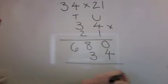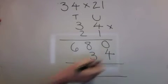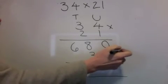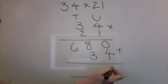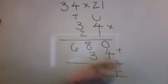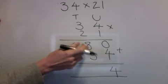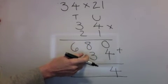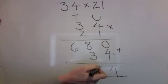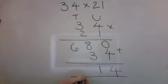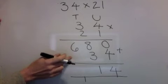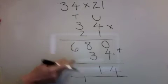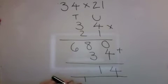Add them together: nothing at 4 is 4. 8 add 3 is 11 — 1 in the box, 1 on the doorstep. 6 add nothing, then let the man in.